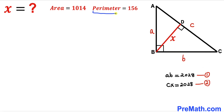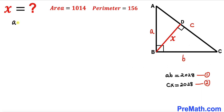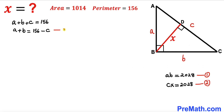We know the perimeter of triangle ABC is 156, and the perimeter is simply the sum of the side lengths: a plus b plus c equals 156. Moving c to the other side gives us a plus b equals 156 minus c. We label this as Equation 3.